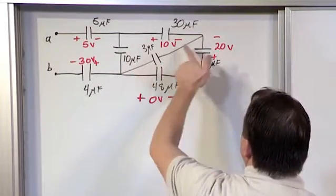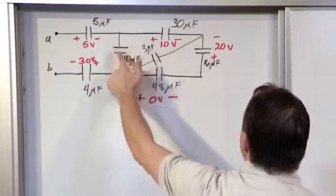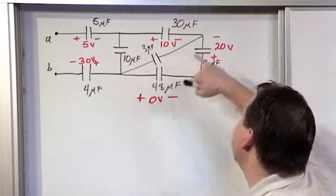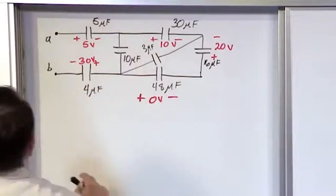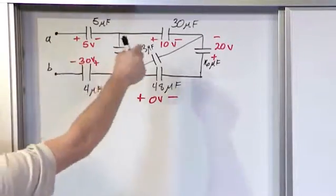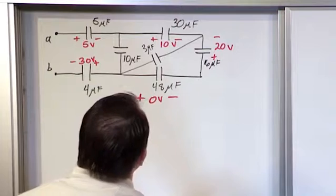We have a 3 microfarad capacitor that's diagonal in here and a 10 microfarad here, and you can see we have voltage drops and the polarities are given. So how would we find the equivalent capacitance looking in with the equivalent initial condition voltage?